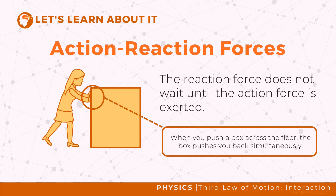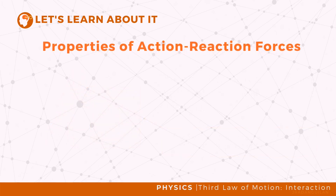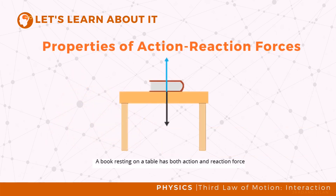Consider a book resting on a table. Due to its weight, the book exerts a force on the table. In return, the table reacts by applying a force on the book that is equal in magnitude but opposite in direction. Note that the action and reaction forces do not cancel each other out, because these forces are exerted on different objects. In this example, we identify both the force exerted by the book and the force exerted on it.